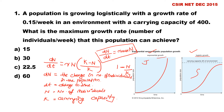Our population is growing logistically. The equation for logistic growth is dN/dt = rN × (K − N) / K, or equivalently rN × (1 − N/K). Here: dN is the change in number of individuals in the population, dt is change in time, N is number of individuals, K is carrying capacity, and r is the per capita rate of increase.